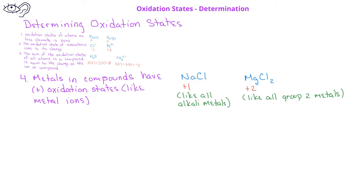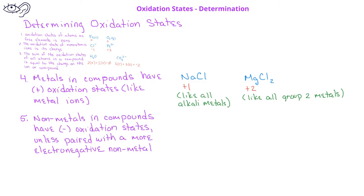The last guideline indicates that nonmetals in compounds will generally have negative oxidation states unless they're combined with more electronegative nonmetals. For example, in calcium fluoride, each fluoride ion would have an oxidation state of minus one, as expected for halogens or group 17 elements. Nitrogen in ammonia would have an oxidation state of minus three. As a rule of thumb, fluoride has an oxidation state of minus one, oxygen has a state of minus two, and hydrogen atoms in compounds have an oxidation state of plus one, even though hydrogen is a nonmetal, because it is usually paired with a more electronegative nonmetal.